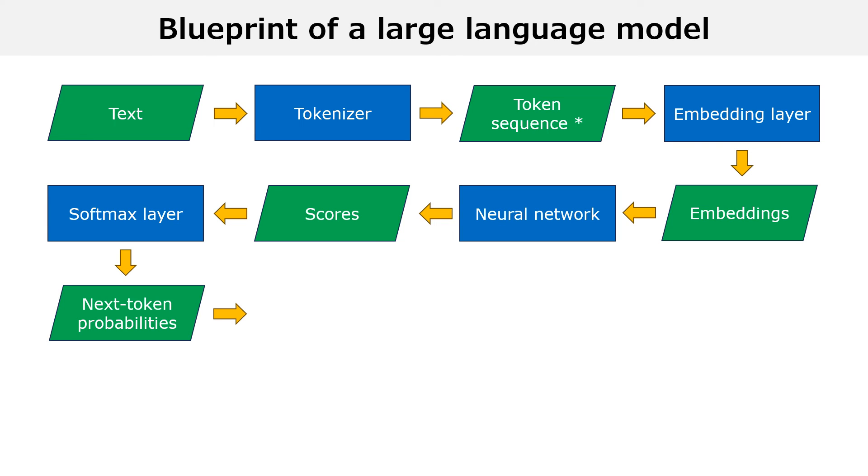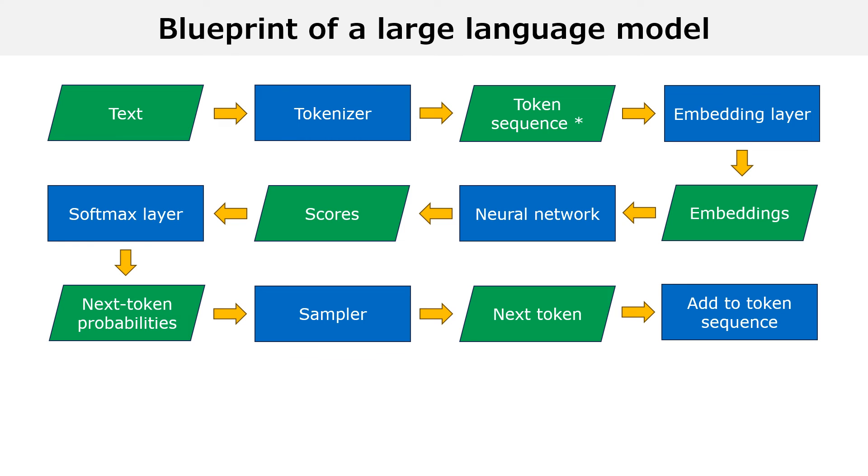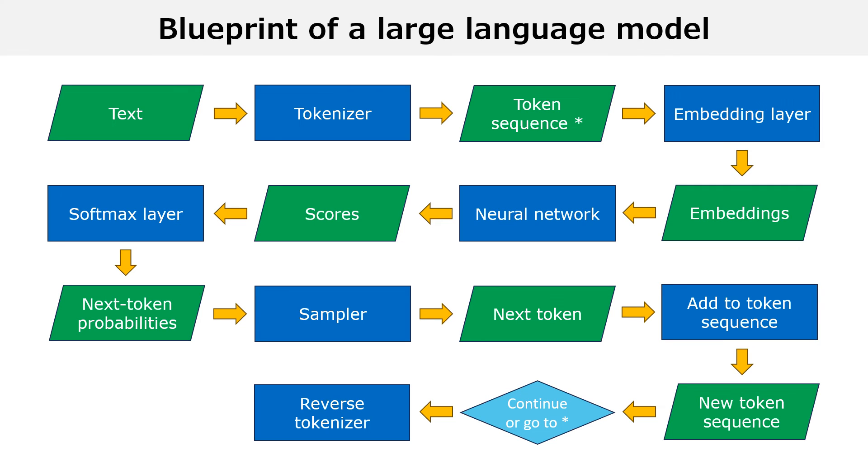Then the probabilities are used to generate the next token using a sampler. The sampler can be a true random sampler, a trivial sampler that always extracts the most probable token, or even something more sophisticated. The sampled token is added to the starting sequence to form a new longer sequence. At this point, we can go back to the step indicated by a star and generate new tokens, or we can stop generating tokens. In the latter case, we use a reverse tokenizer to transform the final sequence of tokens into a text, which is the final output of the language model.